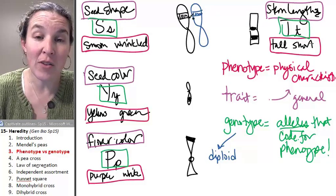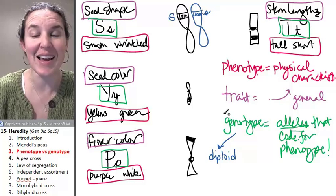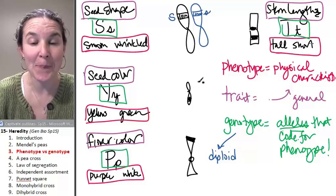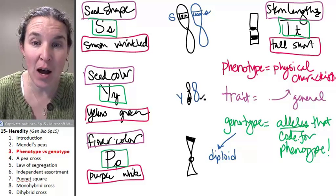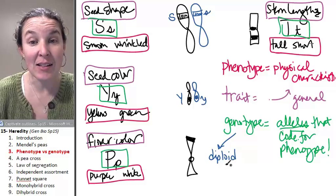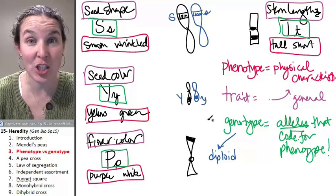We have one of our chromosomes has a big S and one of them has a little s, and then that's my genotype. All right, here, one of my chromosomes has a big Y, and one of them has a little y, and that's my genotype. That represents my genotype.